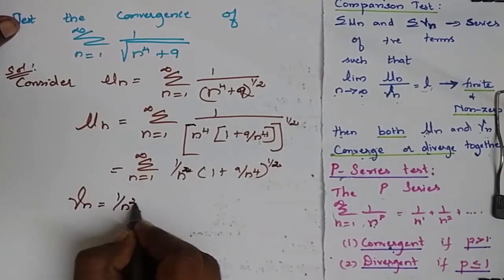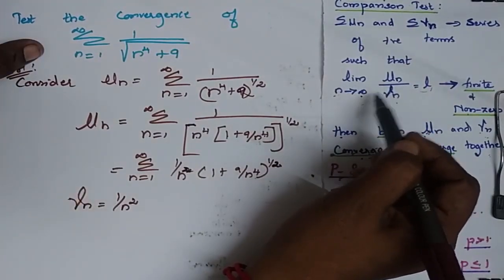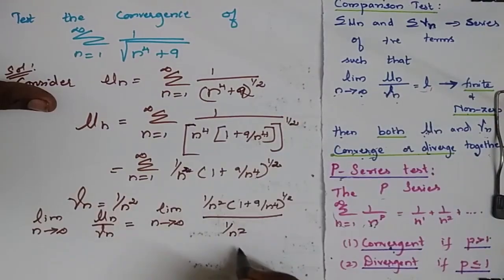Consider my bn as 1 by n. I have to find limit n tends to infinity of un by bn. So I will get this.